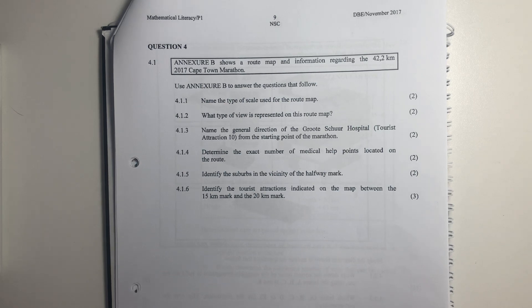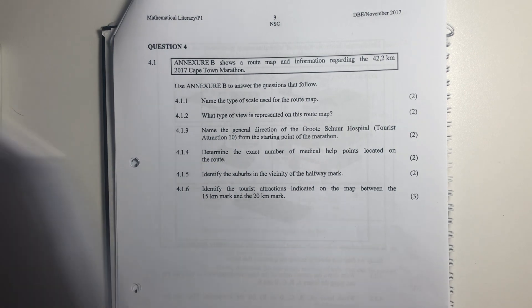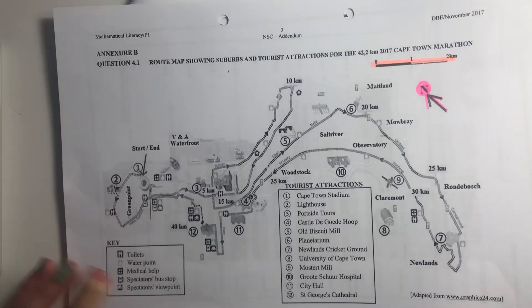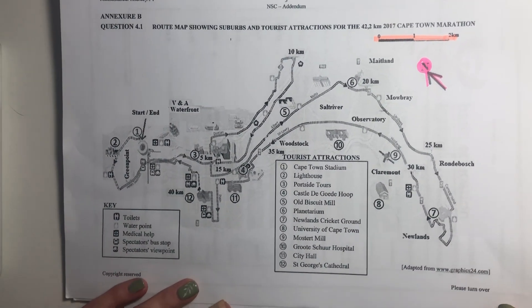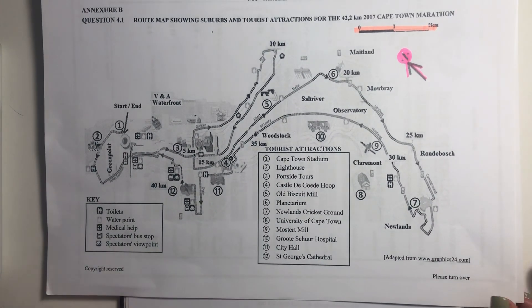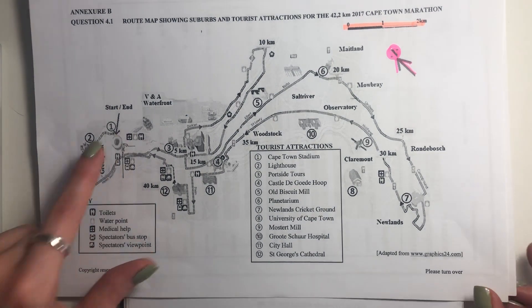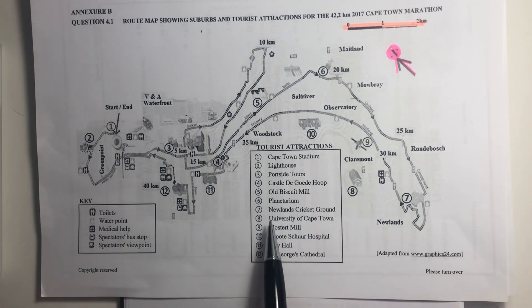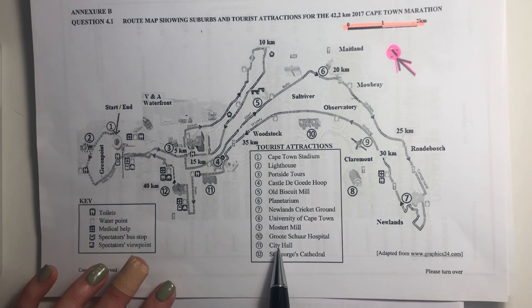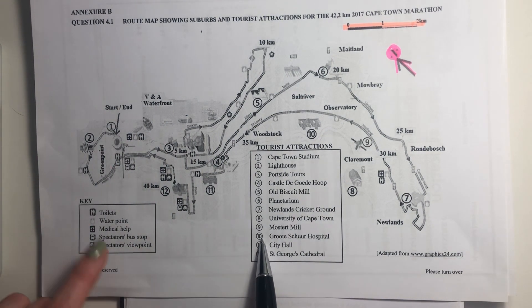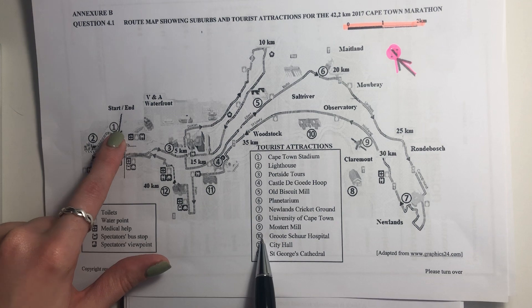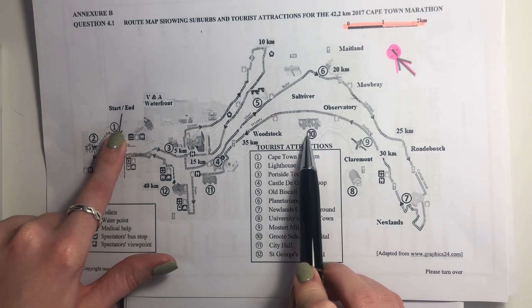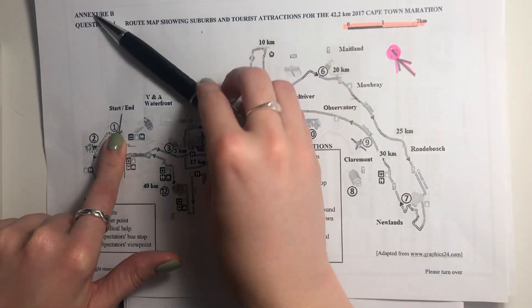Name the general direction of the Grutuskir Hospital tourist attraction number 10 from the starting point of the marathon. So let's see where we're at. Here's the starting point. And where's Grutuskir? Grutuskir is number 10. So we're at one and we're at number 10. Remember, this is north.